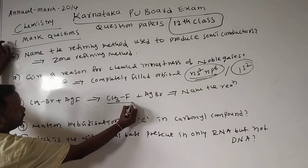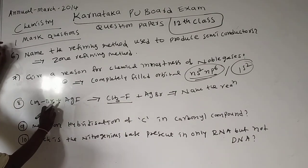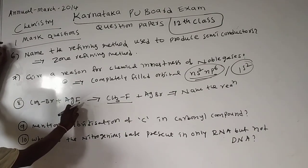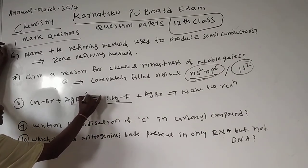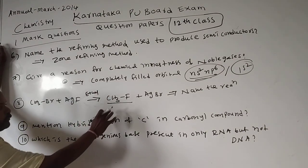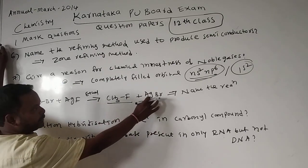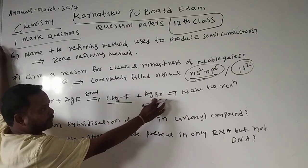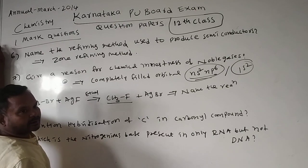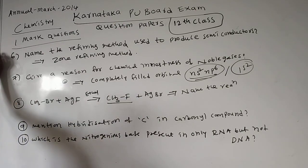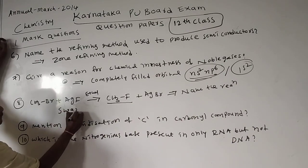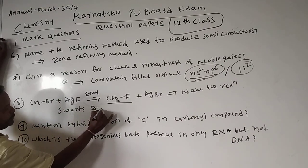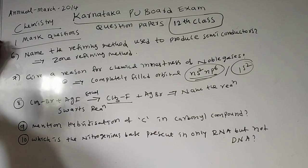Next question: the preparation of fluorocompound — CH3Br (methyl bromide) reacted with silver fluoride (AgF) in presence of ether gives methyl fluoride (CH3F) and AgBr. This is a very important named reaction in organic chemistry for alkyl halides. This is called the Swartz reaction.